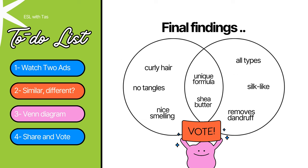Take up their answers on the board by drawing a big Venn diagram and have the students share their findings, then vote for the product they would most likely buy based on these notes.